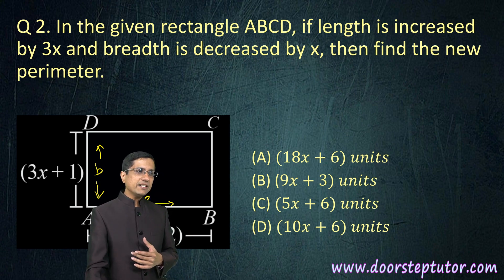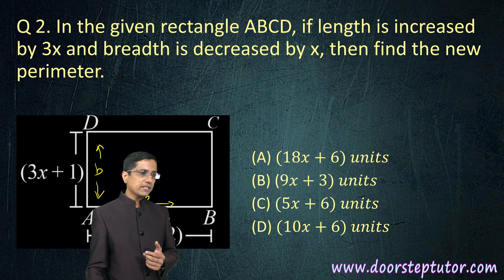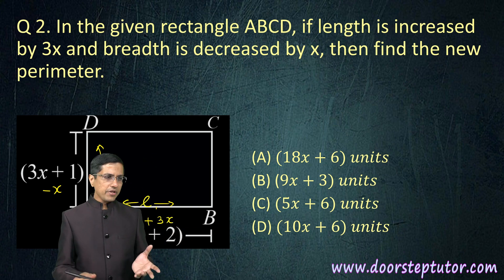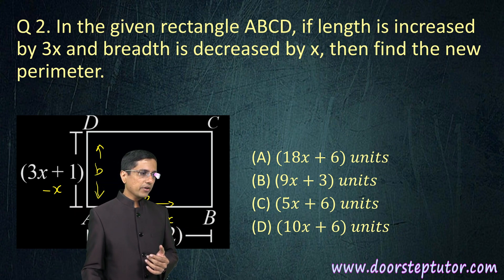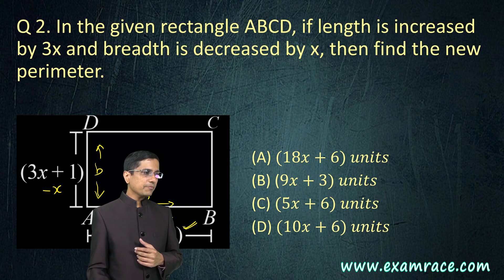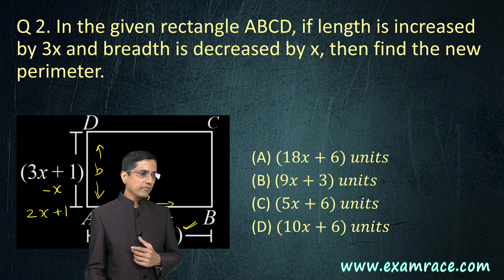Now what else are we told? The length is increased by 3x so we would add 3x to it, so this becomes plus 3x. Breadth is decreased by x so this becomes minus x. We are left with 7x plus 2 on the length side - 3x plus 4x becomes 7x plus 2. On the breadth side we have 3x minus x which becomes 2x plus 1.